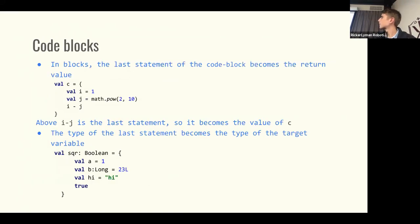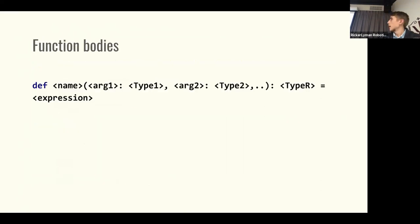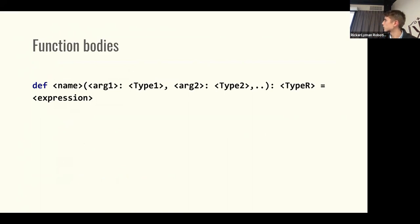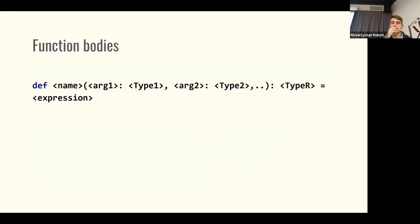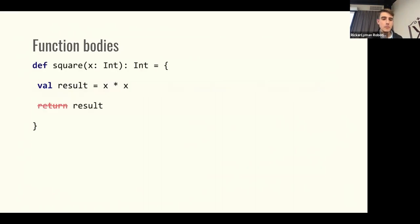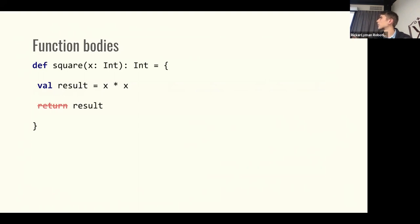Function bodies are also expressions. The definition of a function syntactically looks like this — you can omit the result type, and the compiler can infer it in most cases. But usually it's bad practice to omit it because it can be a source of confusion. There is no required return statement in Scala — the last line of the code block will be the return value of the expression.